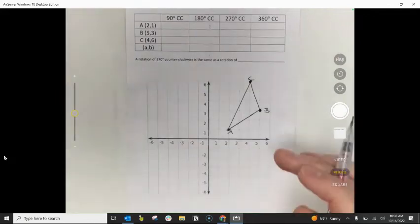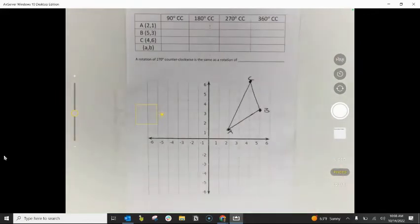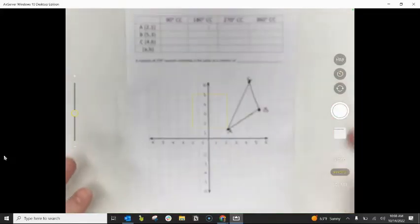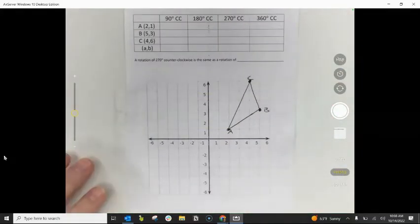All right folks, we've got two goals for this video. Our first goal is we're going to learn how to use patty paper to perform rotations on a coordinate plane. And then we're actually going to learn our rotation rules. How can I tell just by looking at the ordered pairs if there's been a rotation or not?